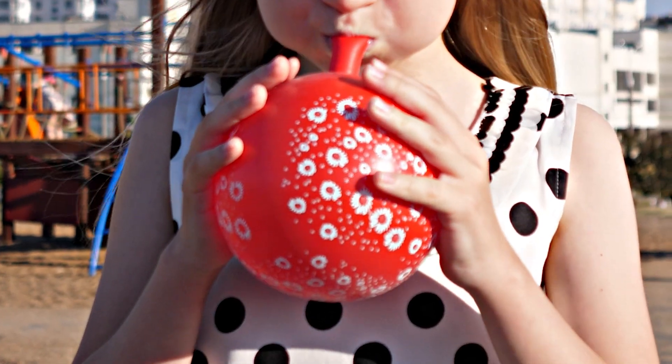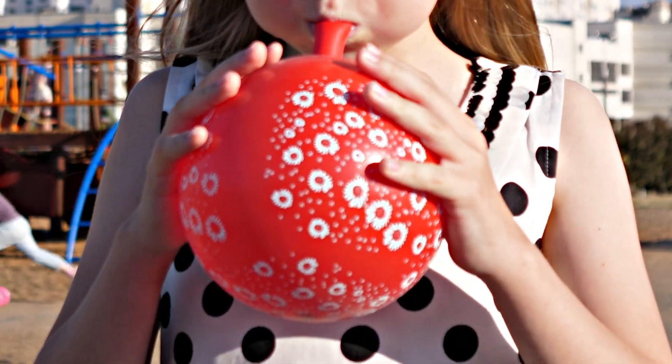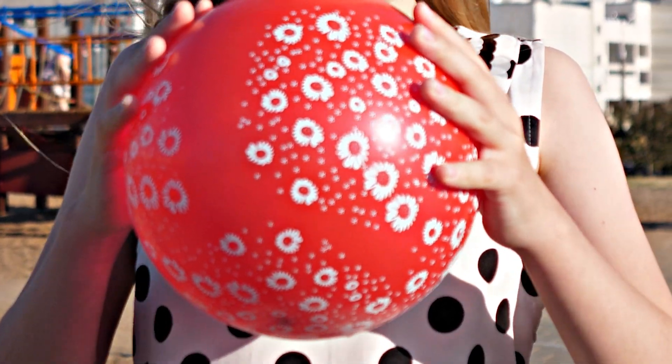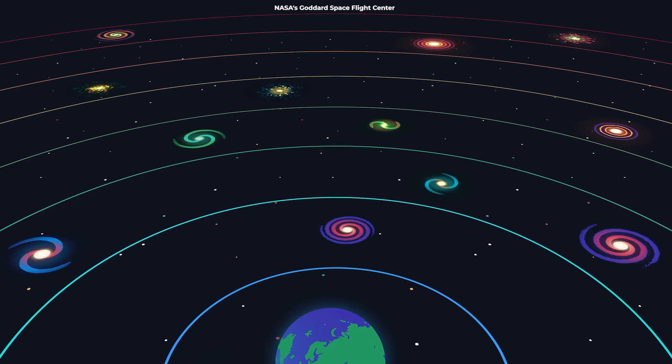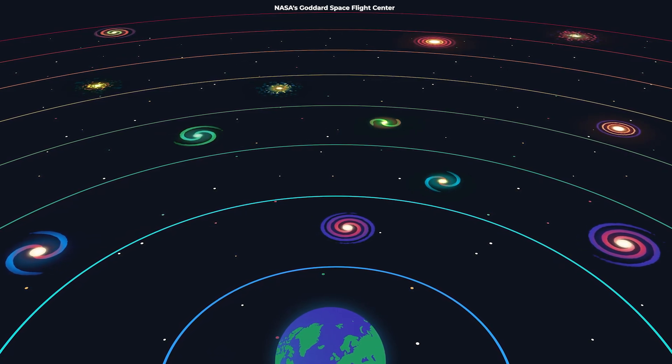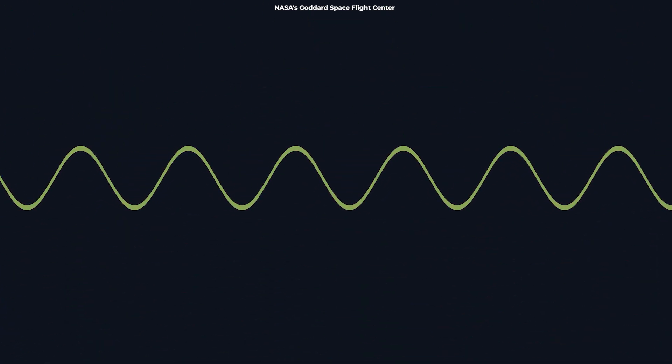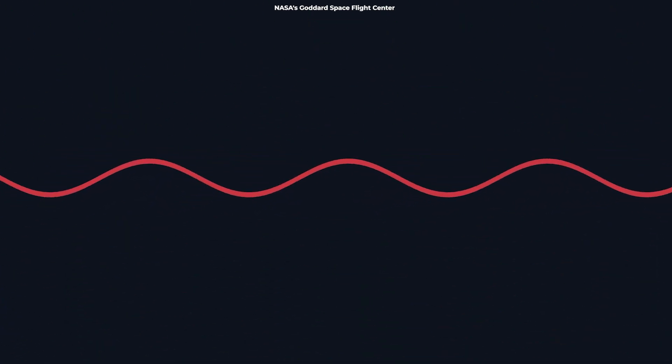Think of it this way. Imagine the universe is a giant balloon. When you blow up the balloon, the dots on its surface move farther apart. Similarly, as the universe expands, the light from distant galaxies stretches and shifts towards red. The greater the distance, the more redshift we see.